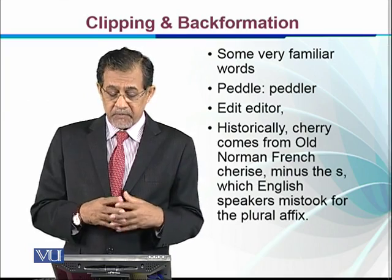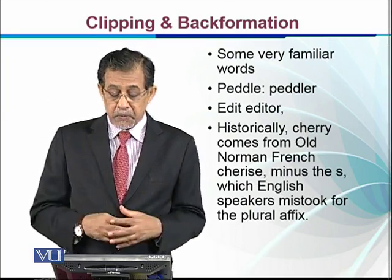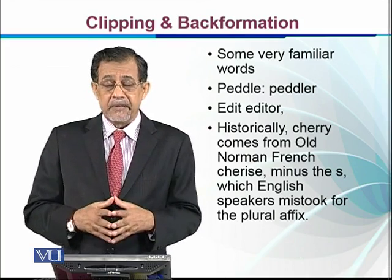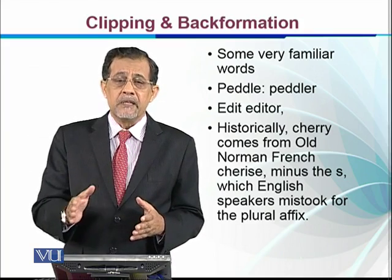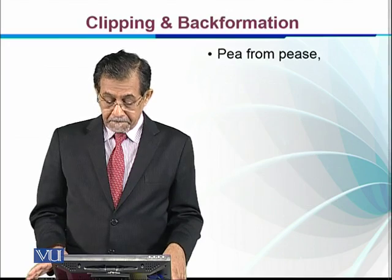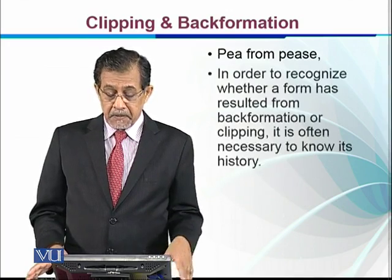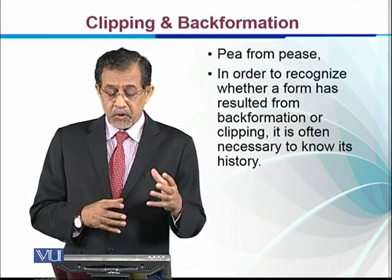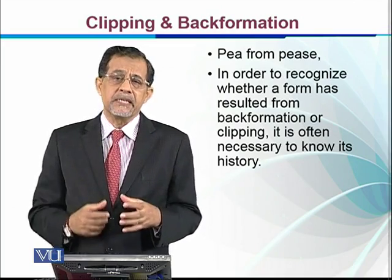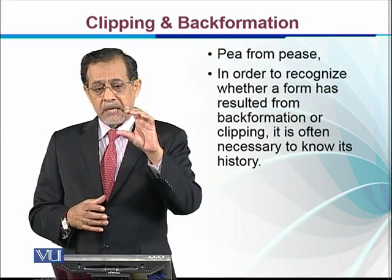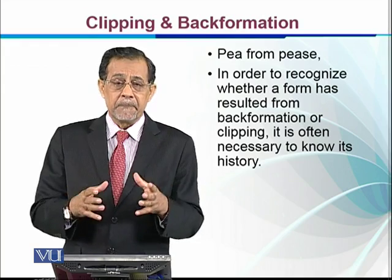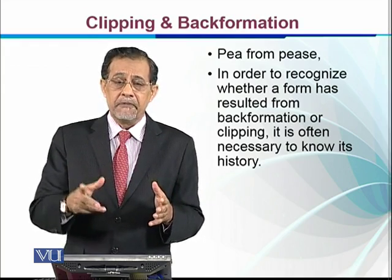Historically, cherry comes from Old Norman French spelled C-H-E-R-I-S-E. When Englishmen came across this word, they removed the S considering it a plural S, and as a result it became cherry. Similarly, pea comes from pease. In order to recognize whether a form resulted from back formation or clipping, it is necessary to know its history — the etymology of the word and which language it came from.